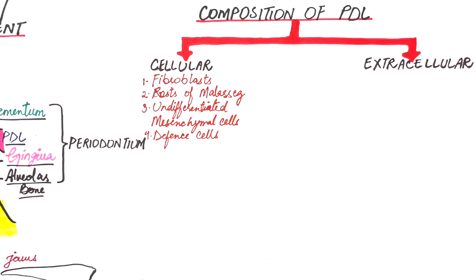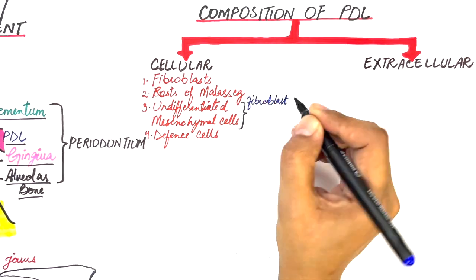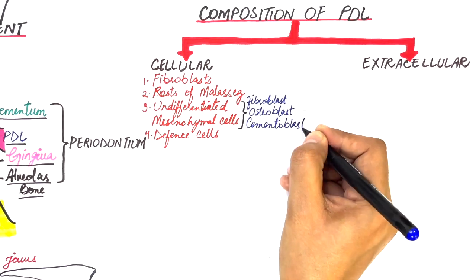The epithelial rests of Malassez are the cell rests of Hertwig's epithelial root sheath. The undifferentiated mesenchymal cells, when stimulated and based on circumstances, can give rise to a fibroblast, an osteoblast, or a cementoblast.